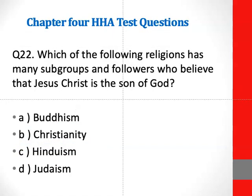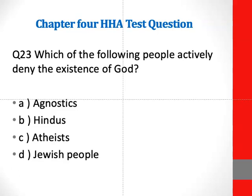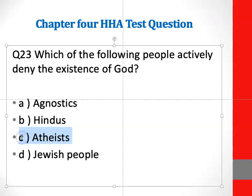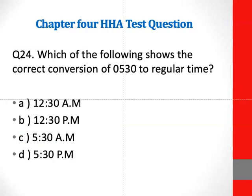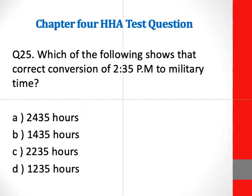Question 22: The correct answer is Christianity. Question 23: Which of the following describes people who actively deny the existence of God? C is the correct answer — atheists. Question 24: The correct answer is C. Question 25: The correct answer is B — 1435 hours.